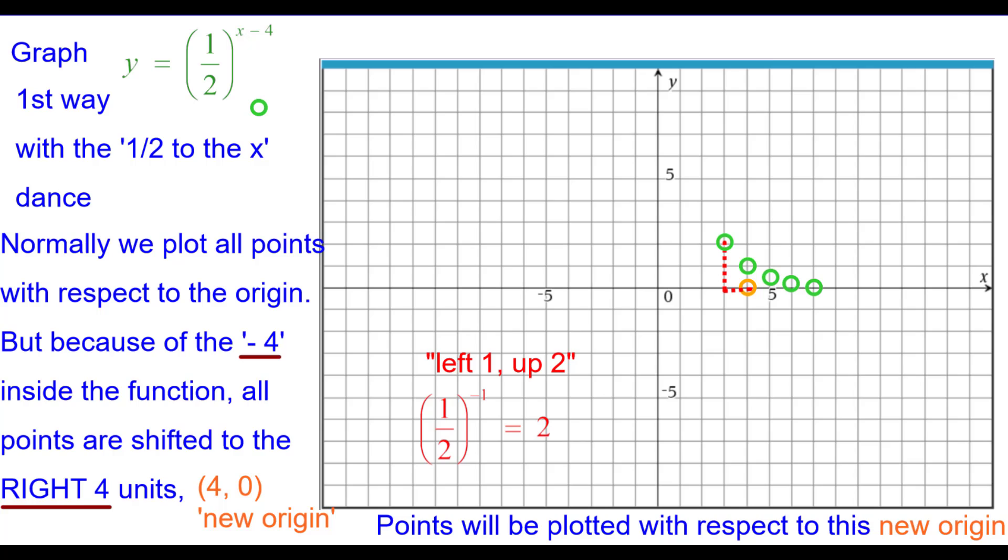Left 1 up 2, because one-half raised to the negative 1 is the reciprocal, which is 2. Left 2 up 4; one-half raised to the negative 2 is positive 4. And left 3 up 8; one-half raised to the negative 3 is 8.